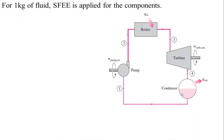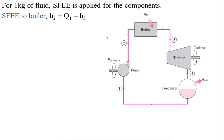For the boiler: energy in equals energy out, so h₂ + Q_in = h₃, which gives Q_in = h₃ − h₂. For the turbine: h₃ = h₄ + W_T, so turbine work W_T = h₃ − h₄. For the condenser: Q_out = h₄ − h₁. For the pump: h₁ + W_P = h₂, so pump work W_P = h₂ − h₁.